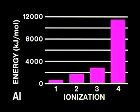However, there is an especially large jump in the energy required for removal of the fourth electron. From a knowledge of the electron configuration of neutral aluminum, can you account for this dramatic jump?